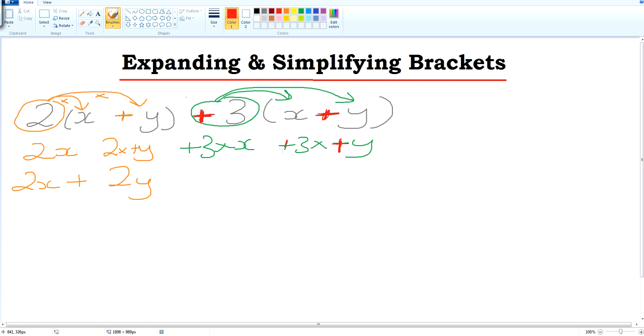Let's carry on. So now we have plus 3 times x will give us plus 3x. Plus 3 times plus y—plus 3 times plus y will give us plus 3y.